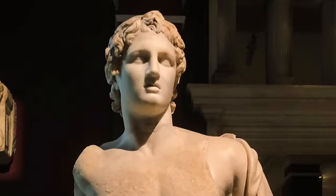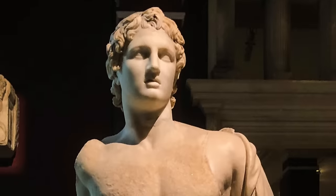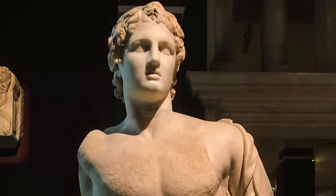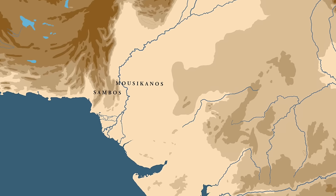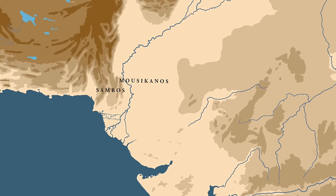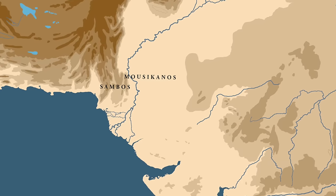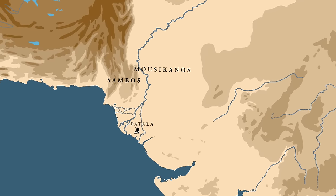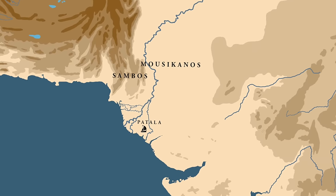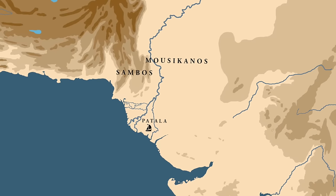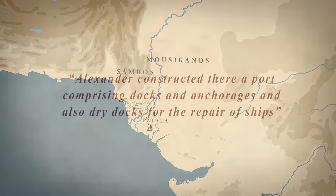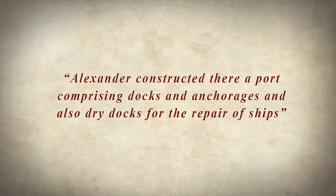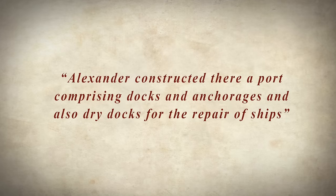When Alexander conquered the Achaemenid empire, he too travelled in this region. Classical accounts mention small kingdoms that ruled here — Arrian, for instance, mentions the kingdoms of Mossicanos and Sambos that were conquered by Alexander. A city called Patala is also mentioned, situated at the mouth of the river Indus. Arrian writes that Alexander constructed a port there comprising docks, anchorage, and dry docks for the repair of ships.